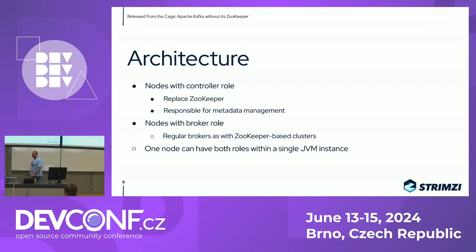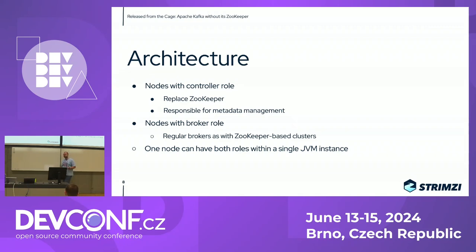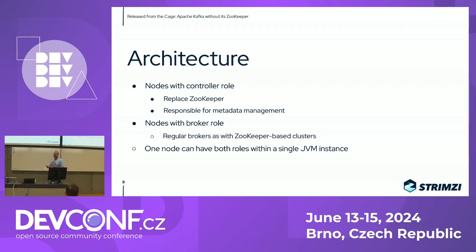If you're just running Kafka consumers and producers, you don't really care whether the cluster runs KRaft or is ZooKeeper-based — they work the same for both. But if you're running the Kafka cluster itself, the change is huge, especially to the architecture. The way KRaft is implemented, Kafka nodes now have two different roles. One is the controller role, which takes over all ZooKeeper responsibilities. The second is the broker role, which does what brokers do in a ZooKeeper-based cluster — distributing and storing messages.